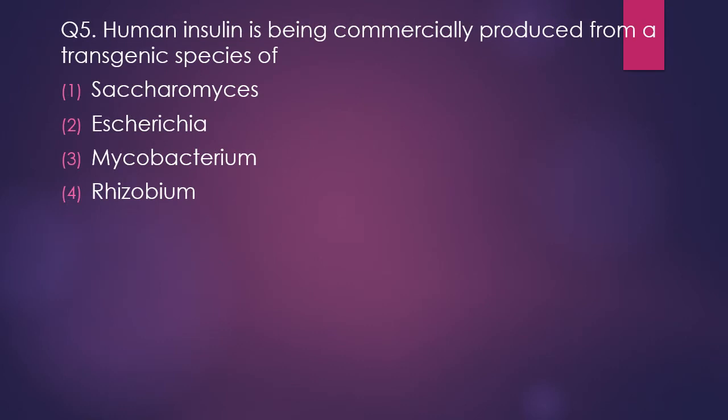Question 5. Human insulin is being commercially produced by a transgenic species of: Saccharomyces, Escherichia coli, Mycobacterium, or Rhizobium. The correct answer is option 2 — Escherichia coli. A recombinant species of E. coli is being used to produce human insulin.